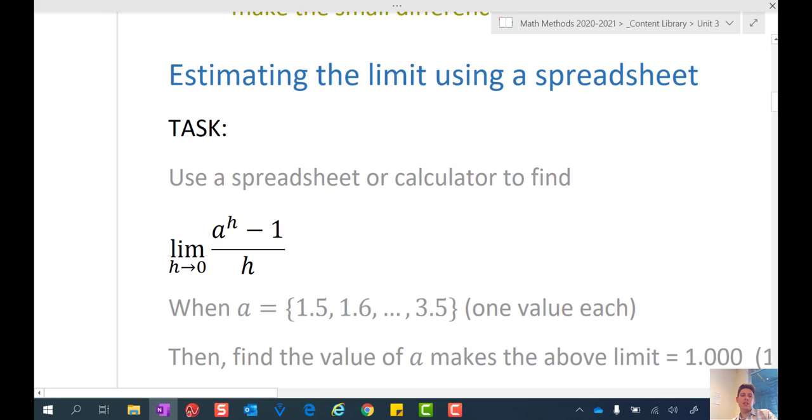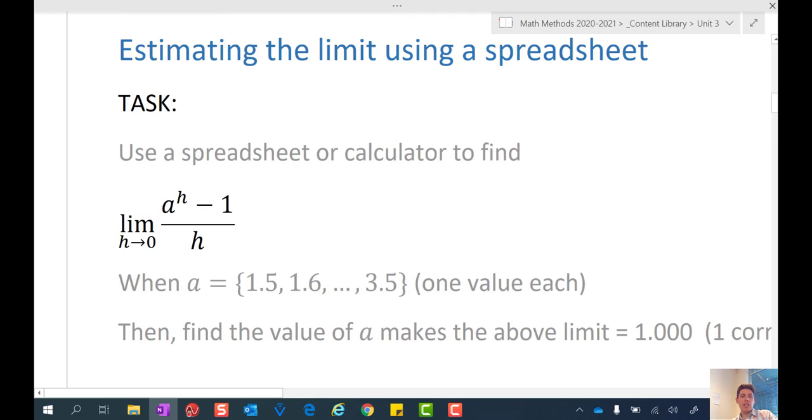If we investigate this function (a^h - 1)/h, subbing in different a values between 1.5 to 3.5 for the a value, and then also subbing in h equal to 0.1, 0.001, etc., you will discover when you sub in a equal to 2.718...